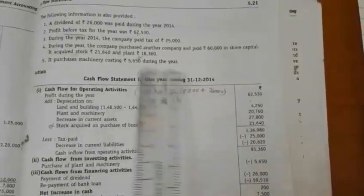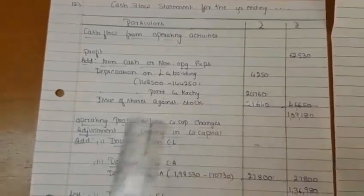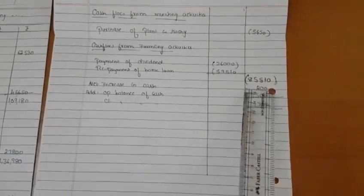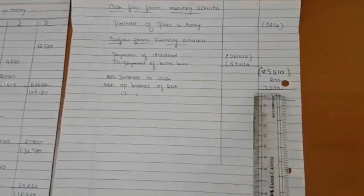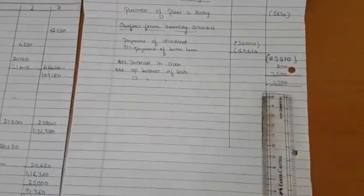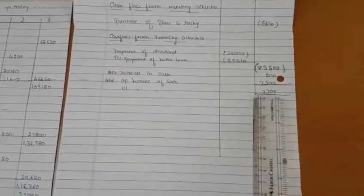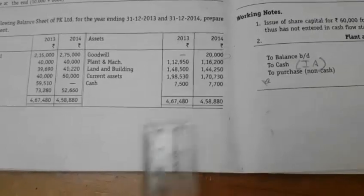The fourth and fifth adjustments have already been considered. Completing the cash flow statement: cash inflow from operating activities is Rs.91,360, cash flow from investing activity is Rs.5,650, and cash outflow from financing activity is Rs.85,510. The net increase in cash is Rs.200. Adding the opening balance of cash Rs.7,500, we get the closing balance of cash Rs.7,700. This amount should tally with the amount given in the balance sheet — closing balance of cash Rs.7,700. With this we complete this problem.